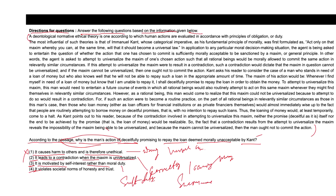The correct answer is option 2, whereas options 1, 3, and 4 are not suitable. Kant deems the action of deceitfully promising to repay a loan morally unacceptable because when universalized — when everyone follows the same principle — it leads to a contradiction. This shows that the action cannot be universalized, making it morally impermissible according to Kant's categorical imperative.